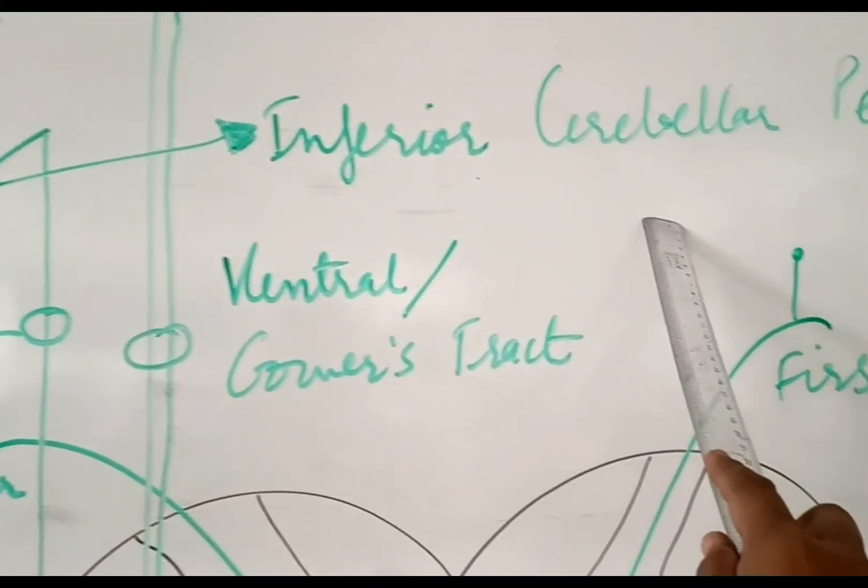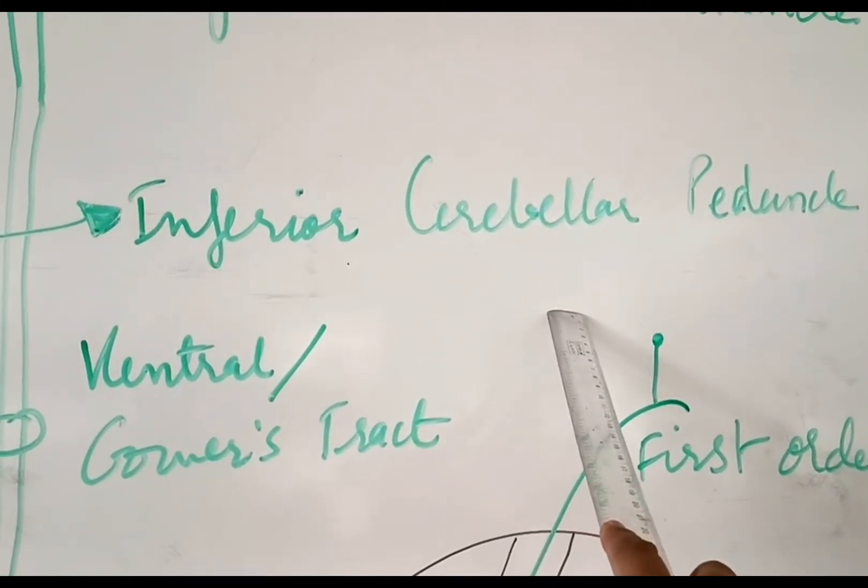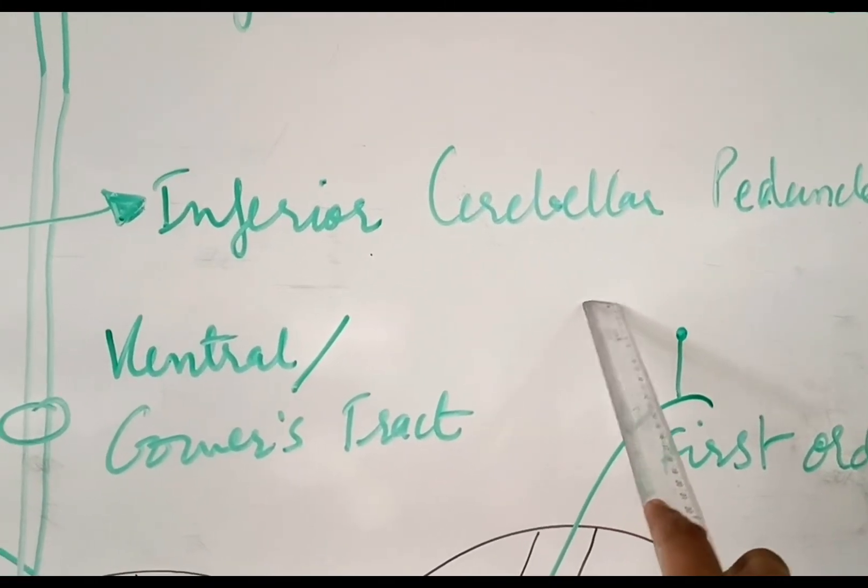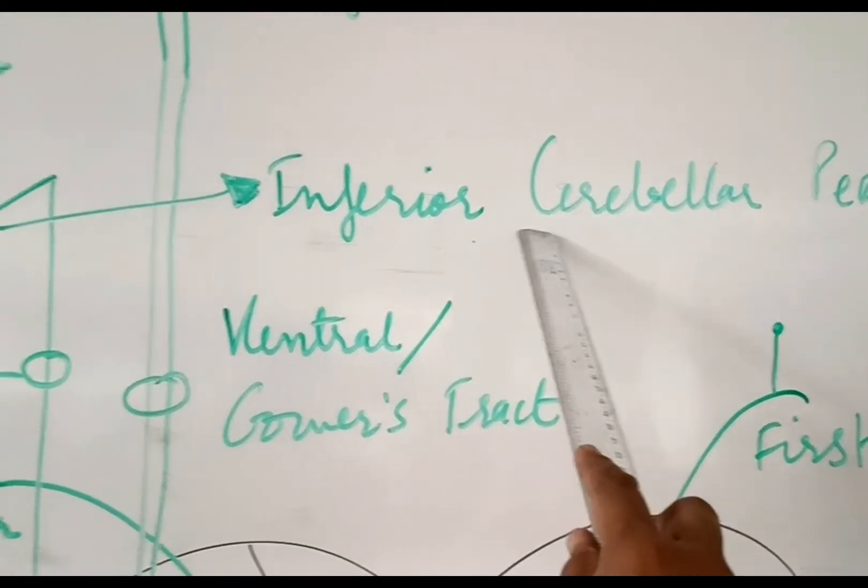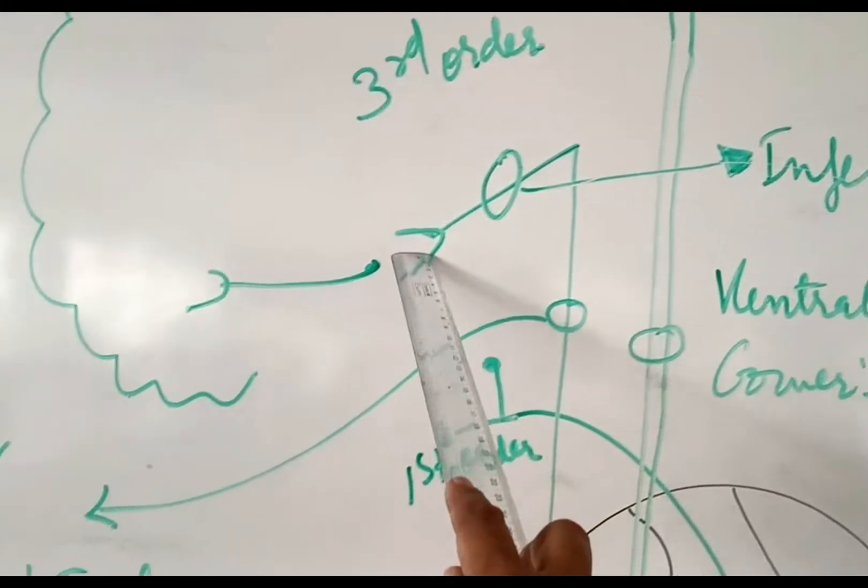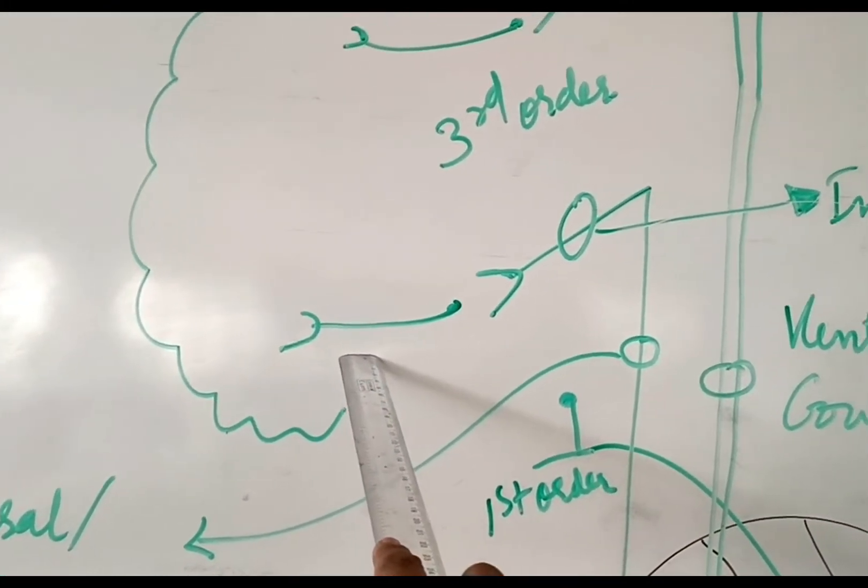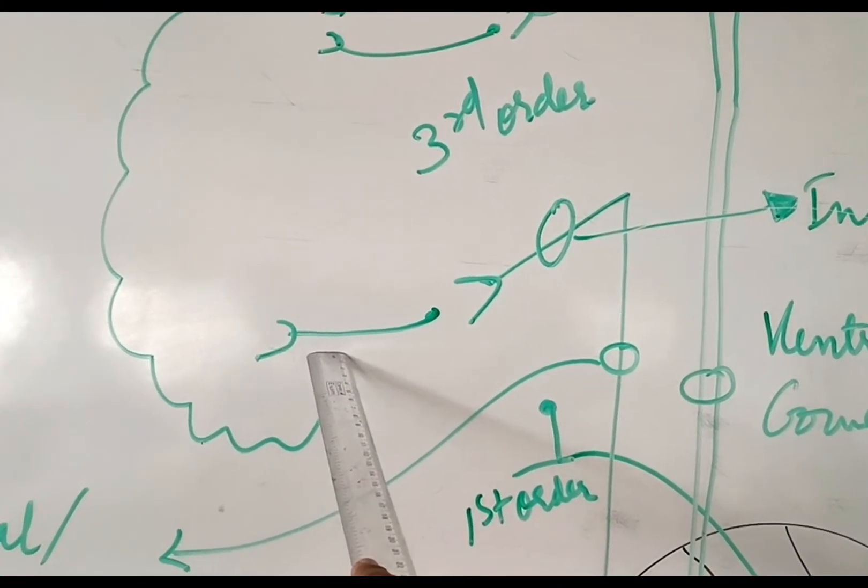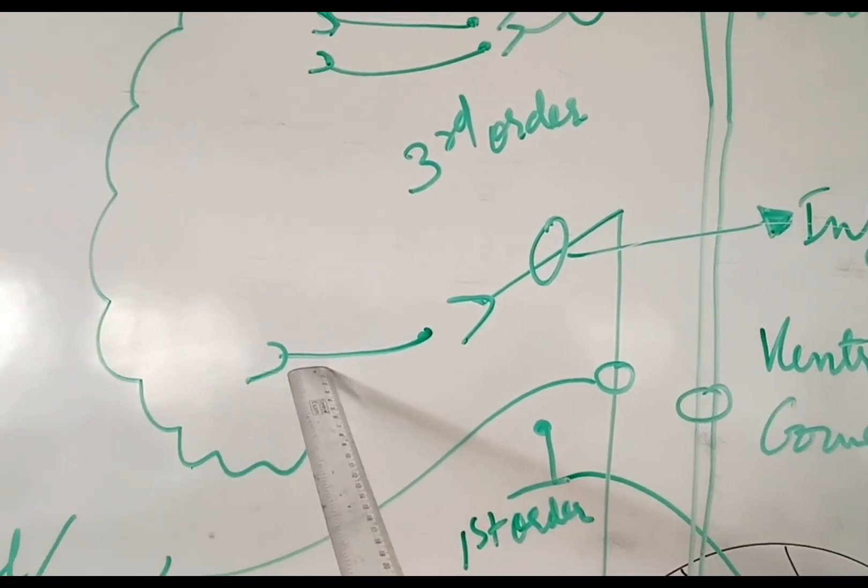And from here, the third order of neuron begins. This third order of neuron is beginning from here. It reaches the cerebral cortex. So this is how the dorsal spinocerebellar tract is depicted.